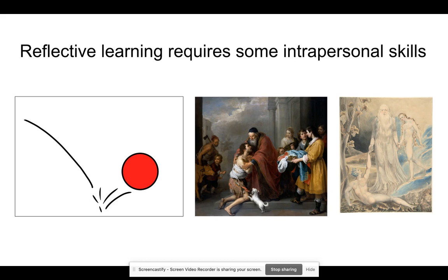One of those skills is resilience — that ability to bounce back from disappointment, from things that haven't gone very well. Another is forgiveness: you've got to be able to forgive yourself before you can learn from a mistake or something that wasn't perfect. And also creativity. That last stage of reflective learning really involves you getting to grips with being inventive, constructive, and creative.